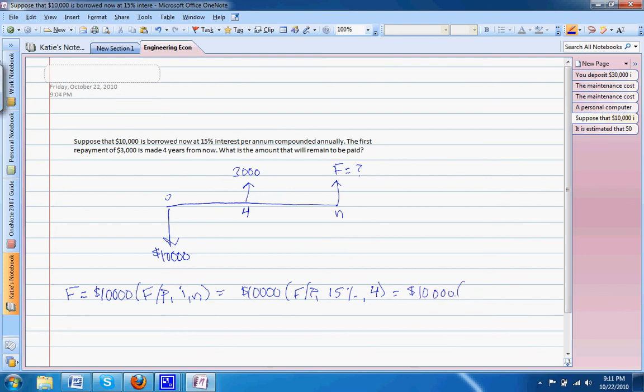If we use our factor tables for F over P at 15% and N equals four, we'll find a factor of 1.749. This means our F is equal to $17,490.